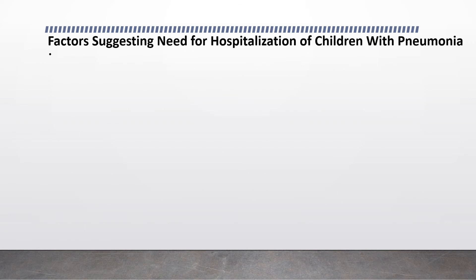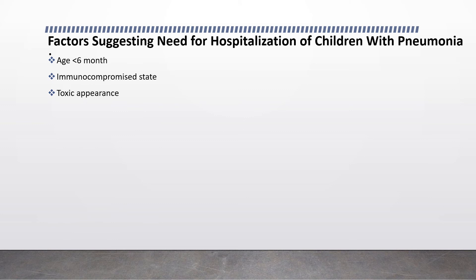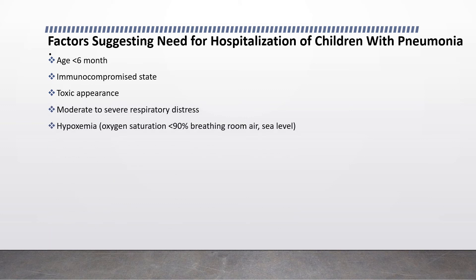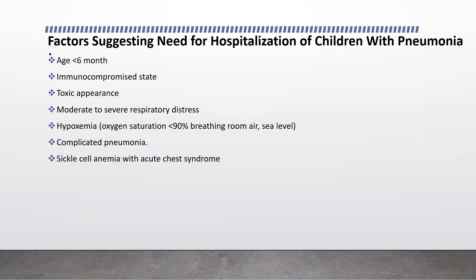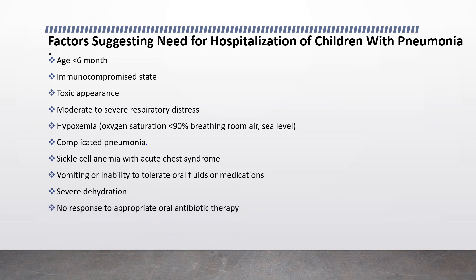Factors suggesting need for hospitalization in children with pneumonia include: age less than six months, immunocompromised state, toxic appearance, moderate to severe respiratory distress, hypoxemia or oxygen saturation less than 90% at room temperature, complicated pneumonia, sickle cell anemia with acute chest syndrome, vomiting or inability to tolerate oral fluids or medications, severe dehydration, and no response to appropriate oral treatment.